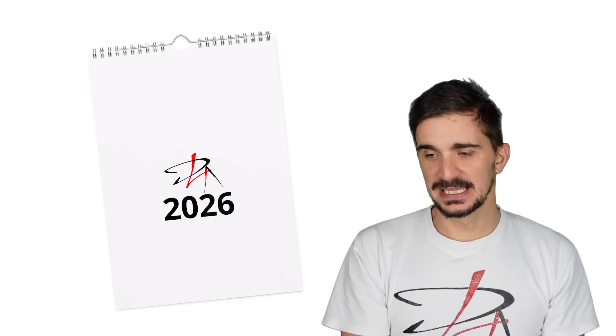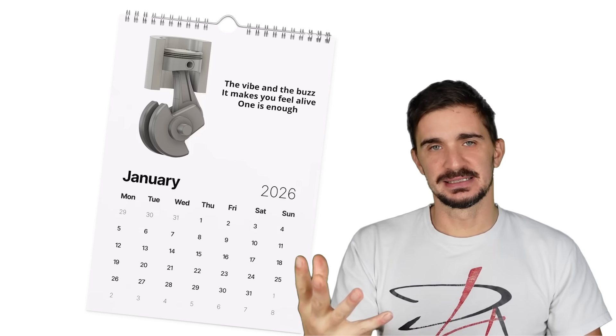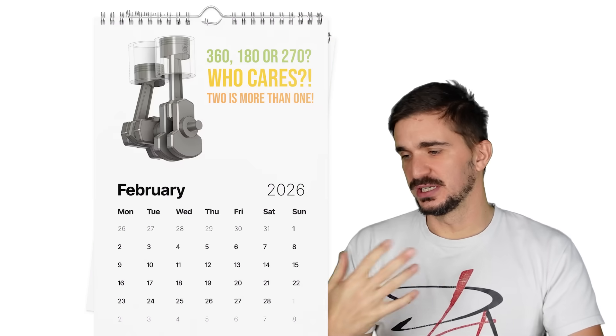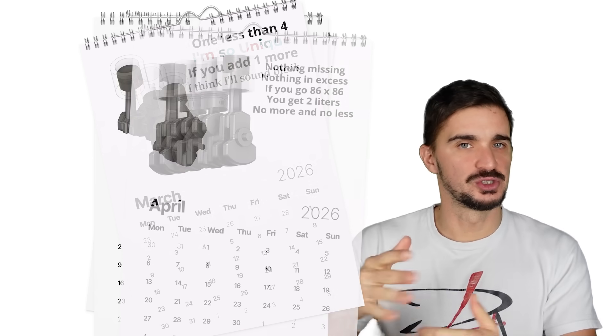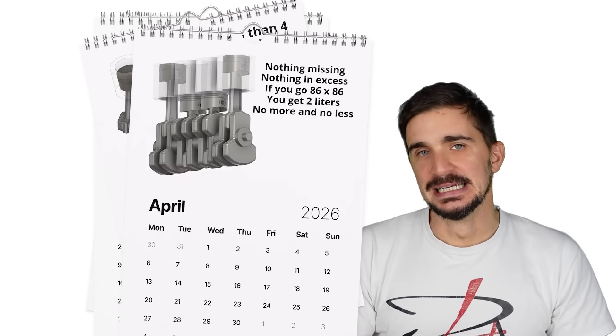Actually, there's one more thing. I know I'm super late to the party, but I made a little calendar for 2026, where like January is a single cylinder, February is a twin, March is a triple, April is an inline four, and so on and so forth until December.